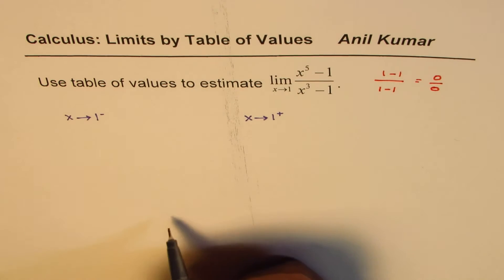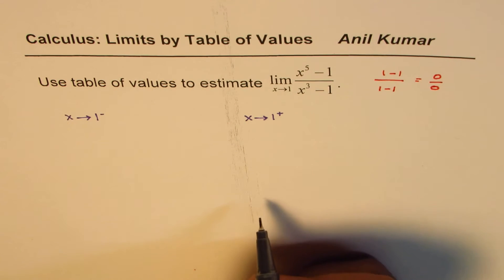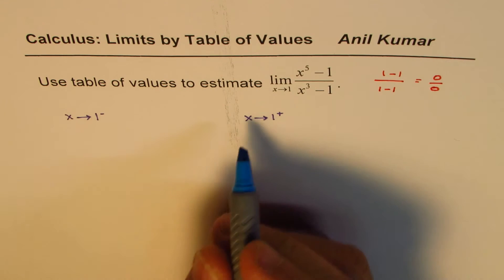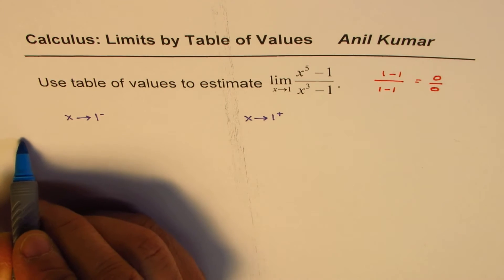A limit exists if and only if both the values are same. Approaching from minus 1, approaching from plus 1, if both give you exactly the same value, then the limit exists. Otherwise, it does not exist. So that's the concept.